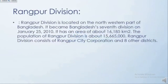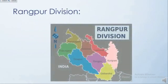Rangpur division is located on the north-western part of Bangladesh. It became Bangladesh's seventh division on January 25th, 2010. It has an area of about 16,185 square kilometres. The population of Rangpur division is about 1,56,65,000. Rangpur division consists of Rangpur city corporation and eight other districts. This is the map of Rangpur division.